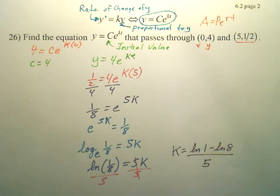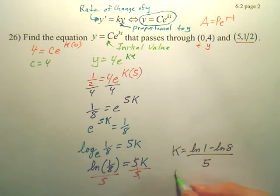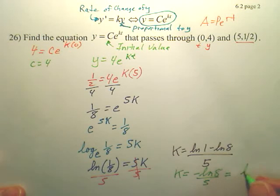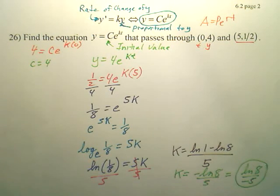Now why would I do that? What's ln(1)? That's 0. So couldn't I simply make k now negative ln(8) divided by 5, or also ln(8) divided by negative 5? Is that a little bit prettier? Hopefully you can see that ln(8) divided by negative 5 is a little bit prettier.